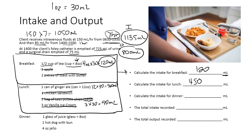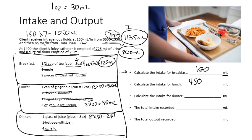For dinner: the patient had a glass of juice — 8 ounces, so 8 times 30 equals 240 mL. They also had 4 ounces of something that melts at room temperature — likely gelatin — so 4 times 30 equals 120 mL. The hot dog with bun is not counted. Total dinner intake: 240 plus 120 equals 360 mL.